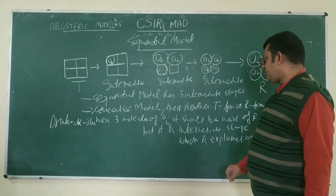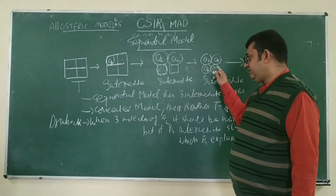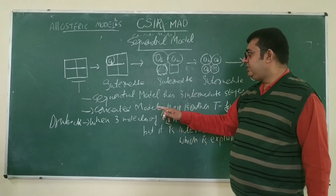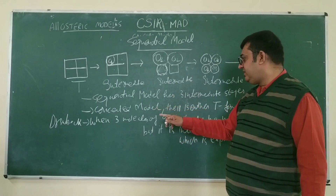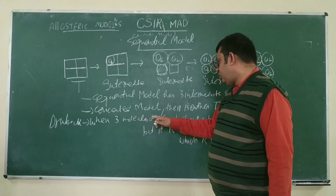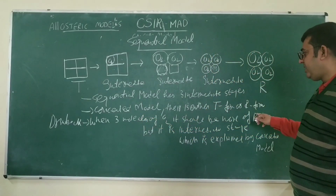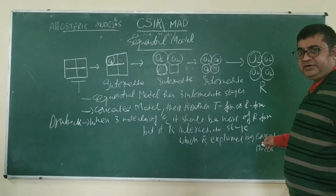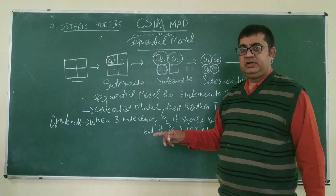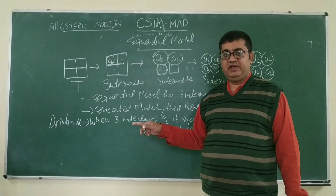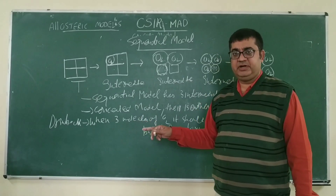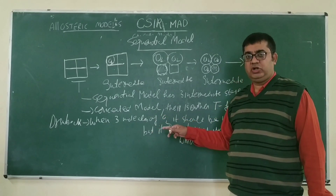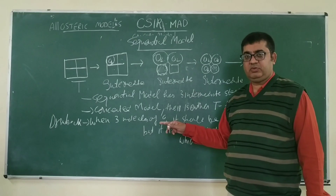This sequential model has three intermediate stages, whereas the concerted model had either the T form or the R form. The drawback of this sequential model is that when three molecules of oxygen are bound, it should show more R form as in the concerted model, but instead it shows an intermediate stage. So where the concerted model fails, the sequential model works, and where the sequential model fails, the concerted model works. There are certain enzymes which work on the basis of the concerted model and others which work on the basis of the sequential model.